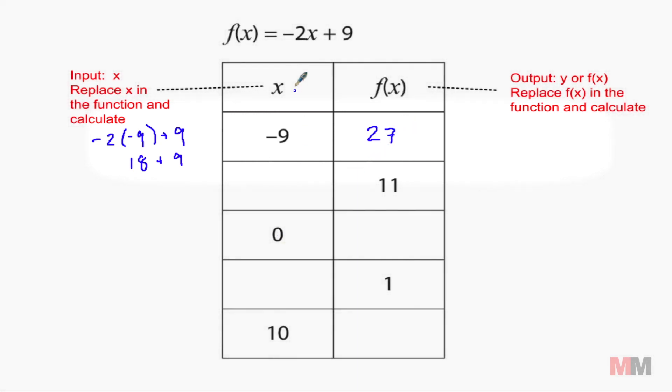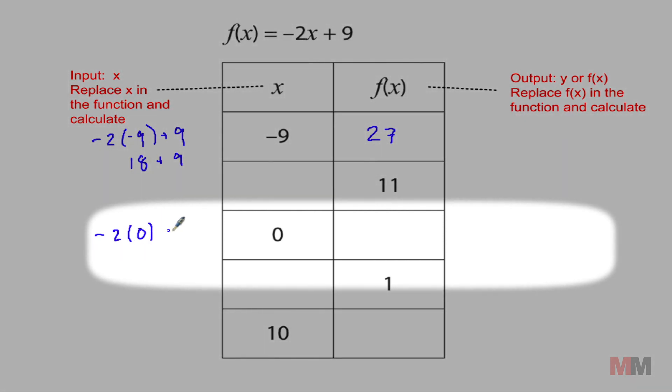Let's go through this one. Plug in x as 0 into the main function and you will get the output. Negative 2 times, instead of x, put a 0 plus 9. You're using this main function. Negative 2 times 0 is 0 plus 9, which is 9.